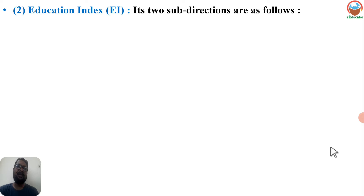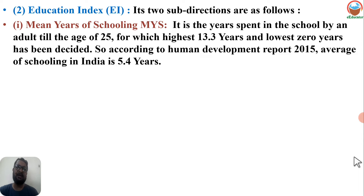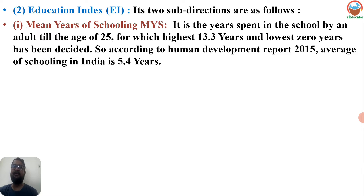The second is the Education Index (EI), which has two sub-parameters. Number one is Mean Years of Schooling (MYS) - the years spent in school by an adult till the age of 25. For this, the highest is 13.3 years and lowest is 0 years as parameters. According to the Human Development Report 2015, the average years of schooling in India is 5.4 years.